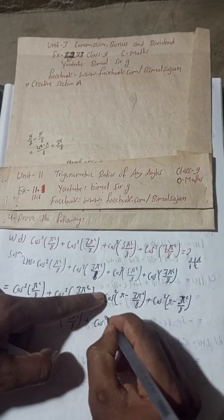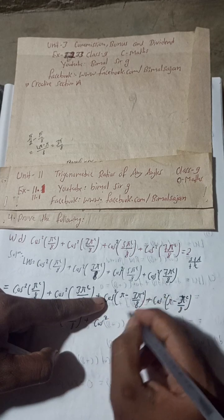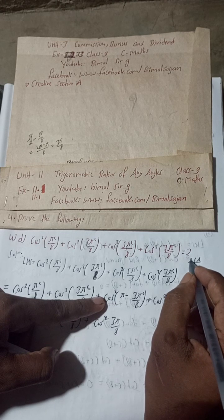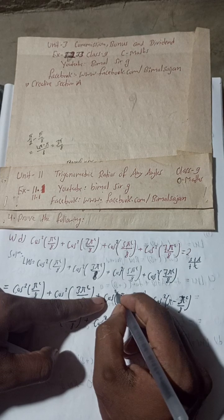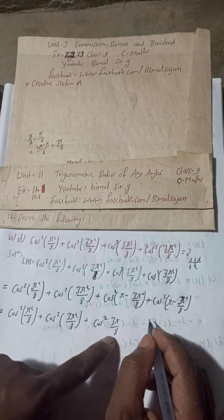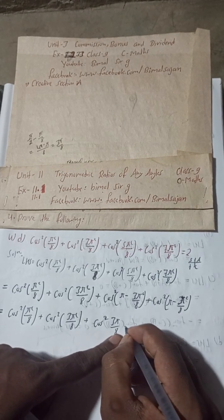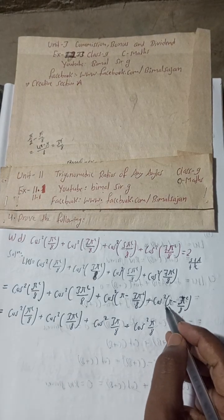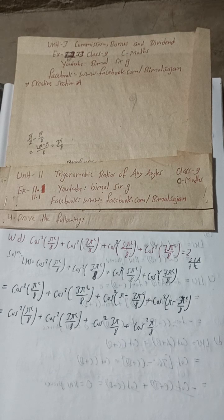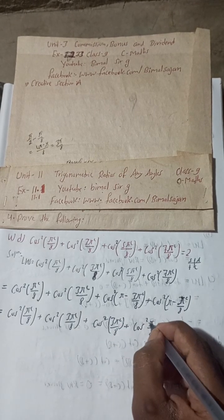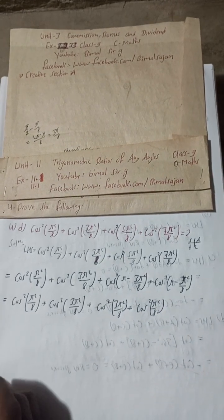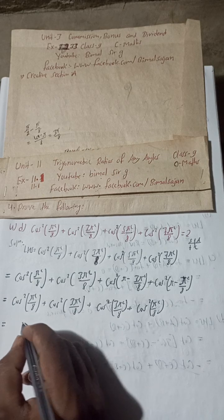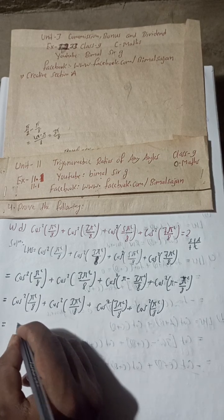Using the CAST rule: π - something means second quadrant, where cos is negative, but the square makes it positive. So this equals cos²(π/8) + cos²(3π/8) + cos²(3π/8) + cos²(π/8). Now taking 2 common: 2[cos²(π/8) + cos²(3π/8)].